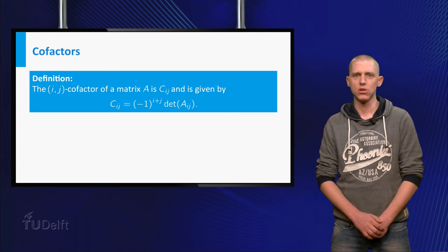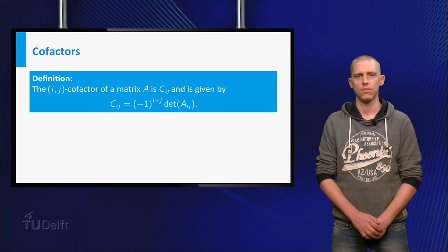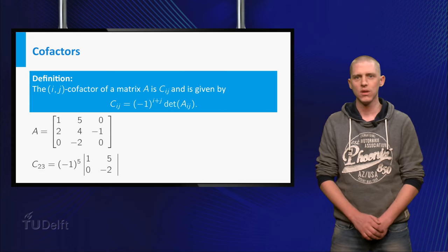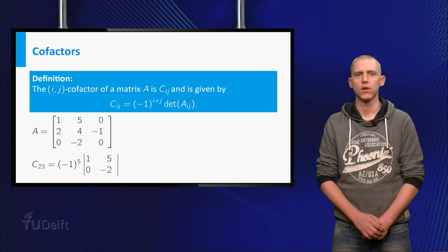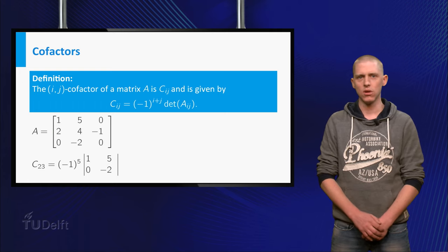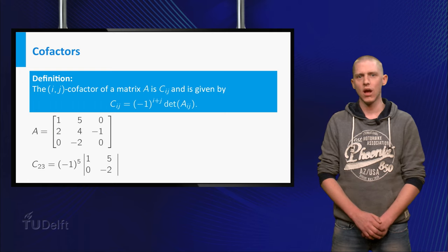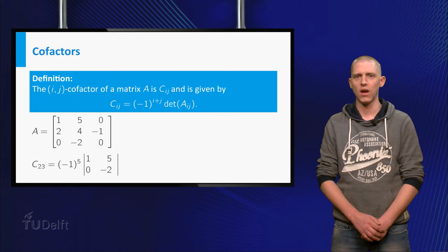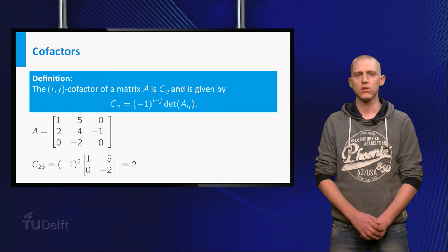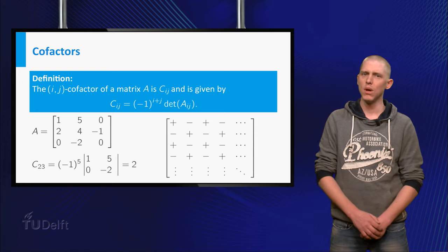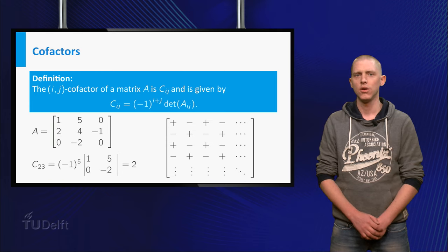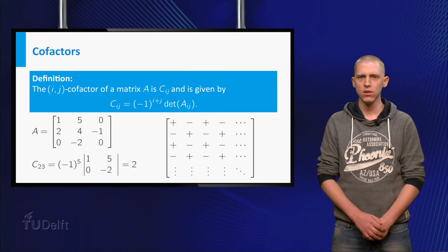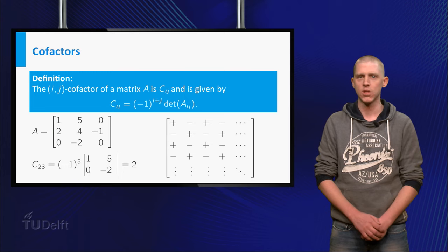Note that you need a determinant to calculate a cofactor. As an example, the cofactor C of the 3 by 3 matrix is given by minus 1 to the power of 5 times the determinant of which becomes 2. To remember when you need a plus or minus 1 in a cofactor, you can remember the alternating pattern starting with a plus at the first entry.